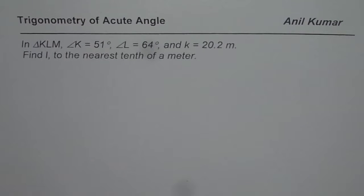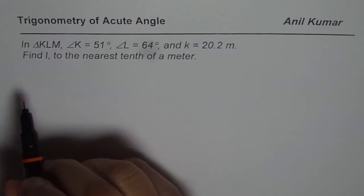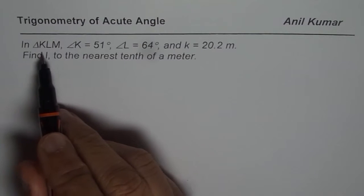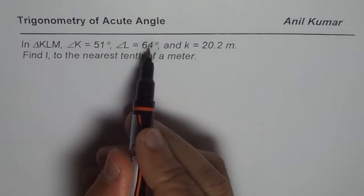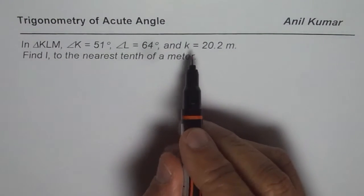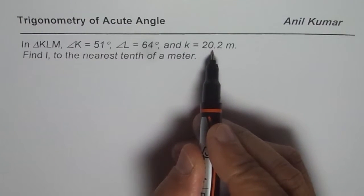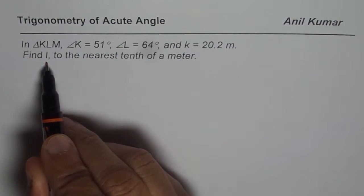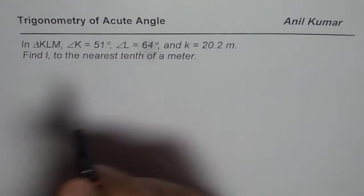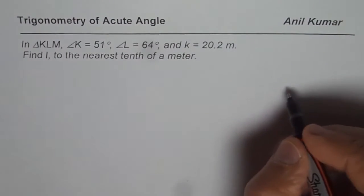I am Manal Kumar and we will try to understand how to use sine law or cosine law to solve acute angle triangles. The question here is: in triangle KLM, angle K is 51 degrees, angle L is 64 degrees, and side K is 20.2 meters long. Find L to the nearest tenth of a meter. So let's first sketch a triangle.